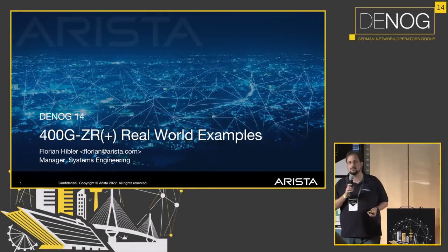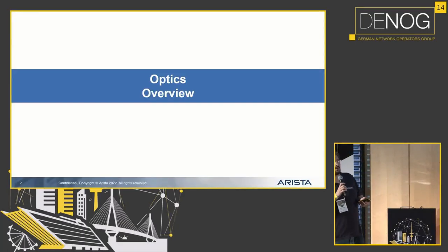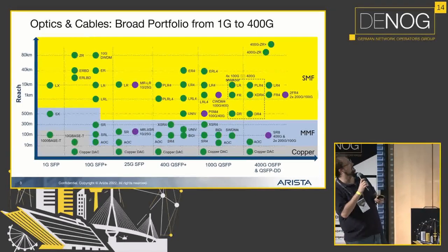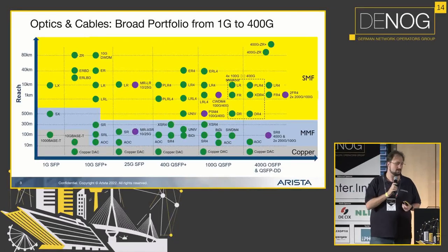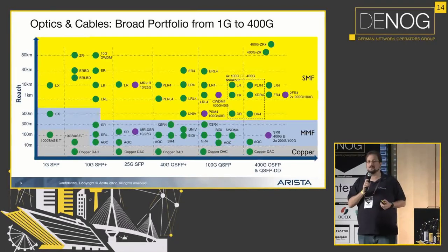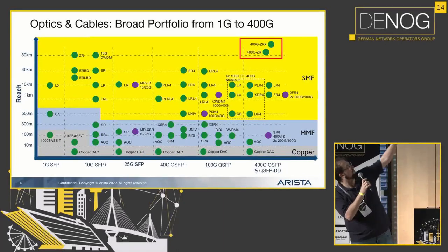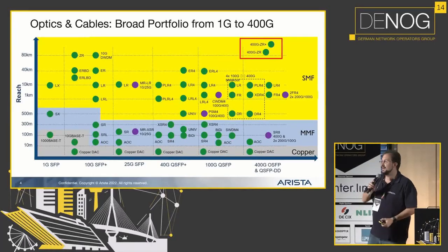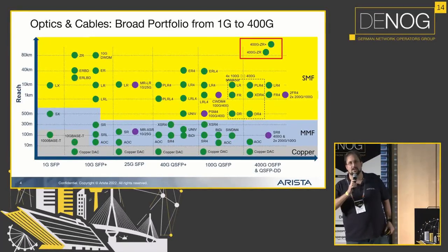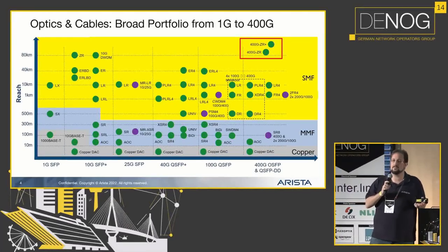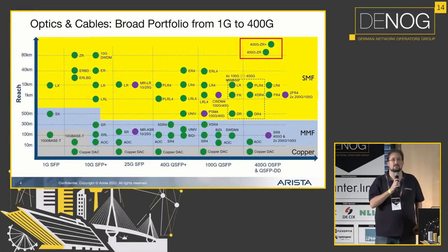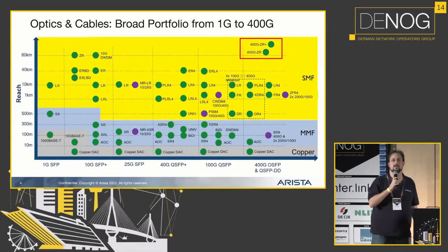What I actually want to talk about is, first of all, where we are with ZR optics in an optics world. By now the optics world can be a bit confusing, but I'm just trying to talk a little bit about this — ZR and ZR Plus: what are those? They are for medium to wide distance services, so anything above 40 kilometers.